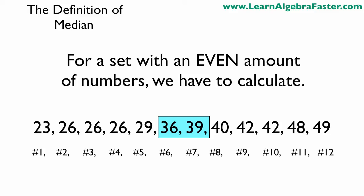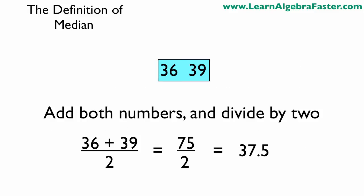To find the median value, we add these numbers and divide by 2. We basically split the difference of the two middle values to find the median. 36 plus 39 is 75. 75 divided by 2 is 37.5.